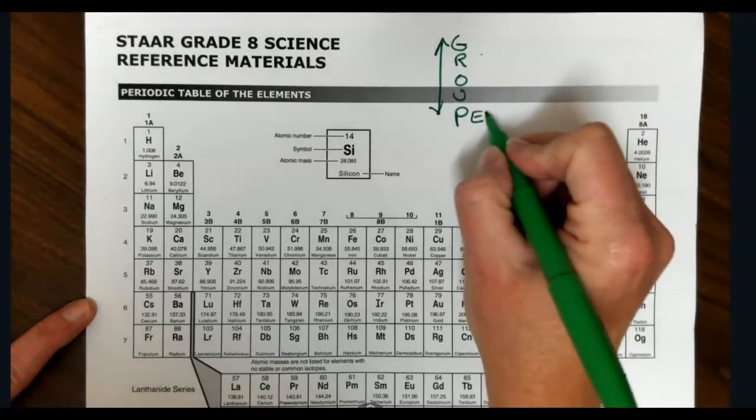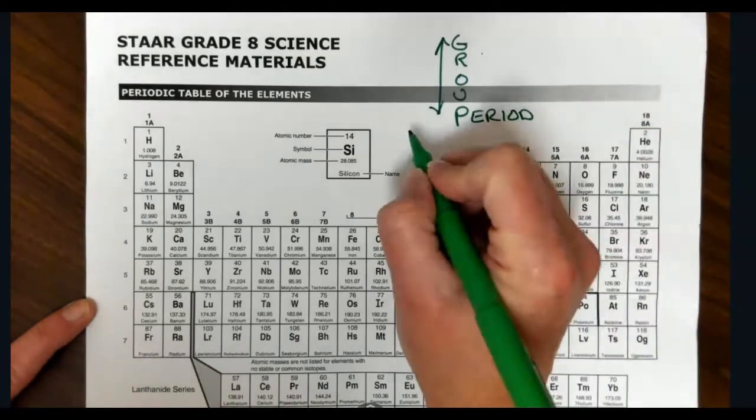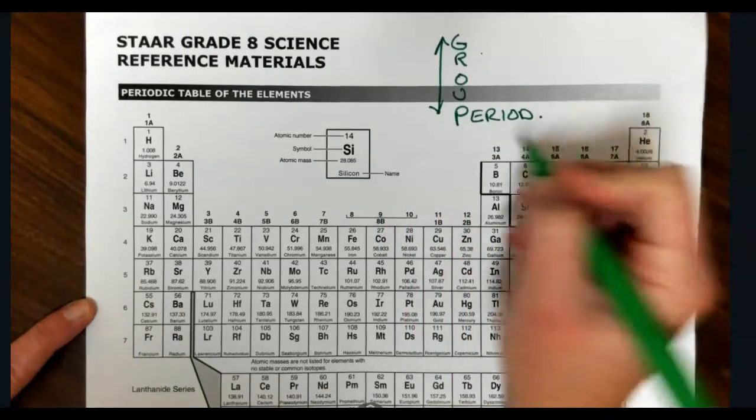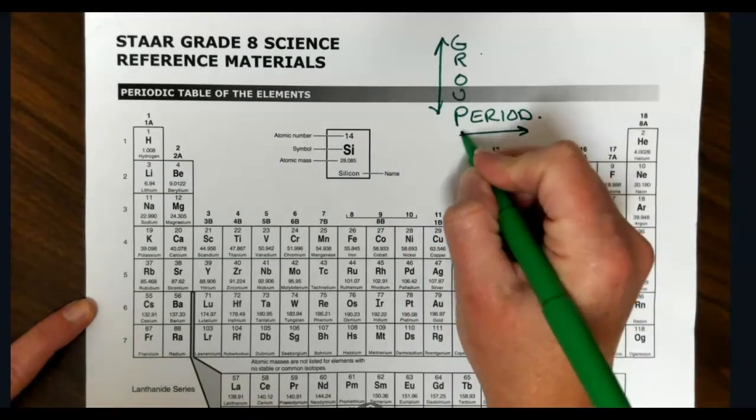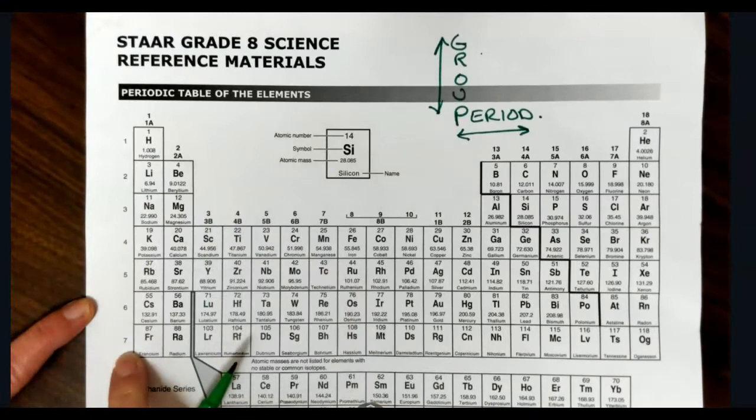Periods go side to side, and the way we remember that is when we write a sentence, you put a period at the end. When we look at the periods, there are seven periods.